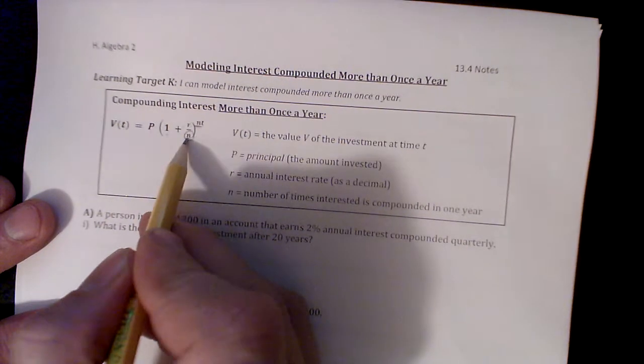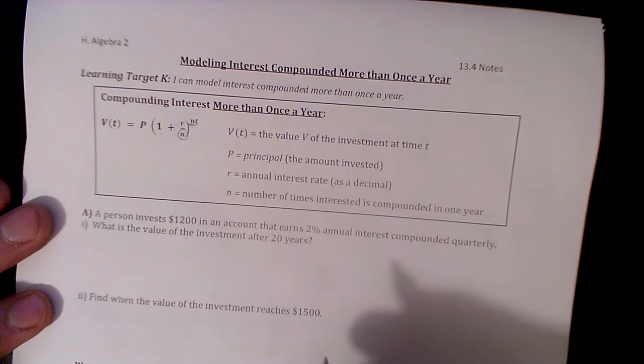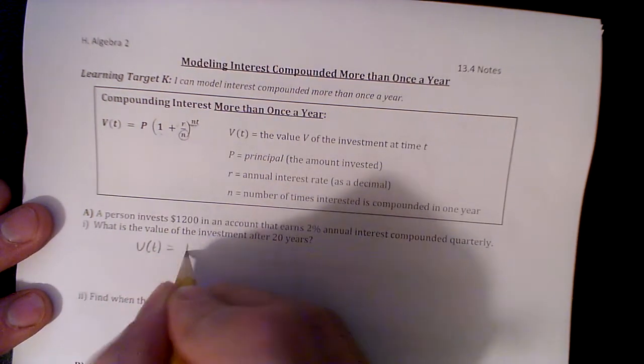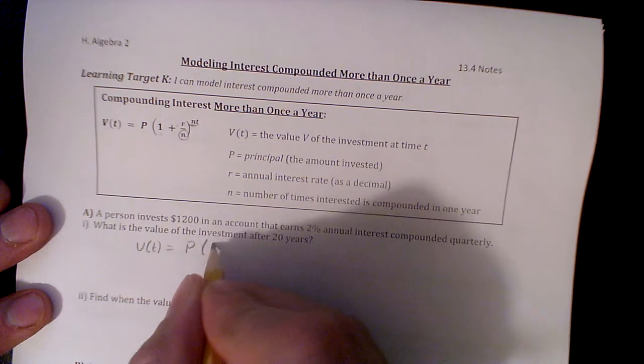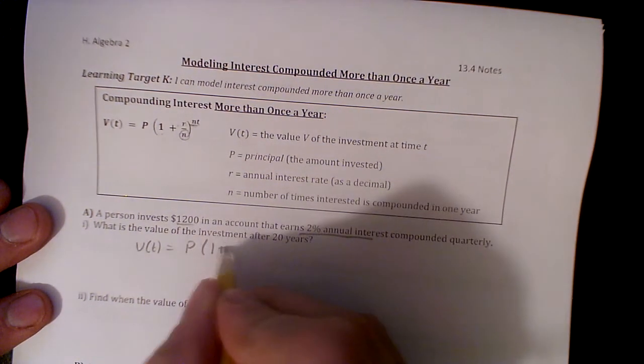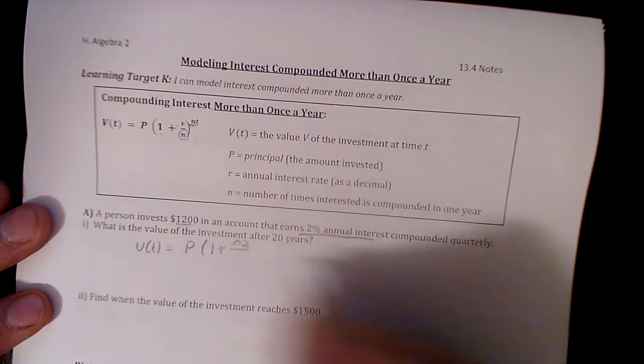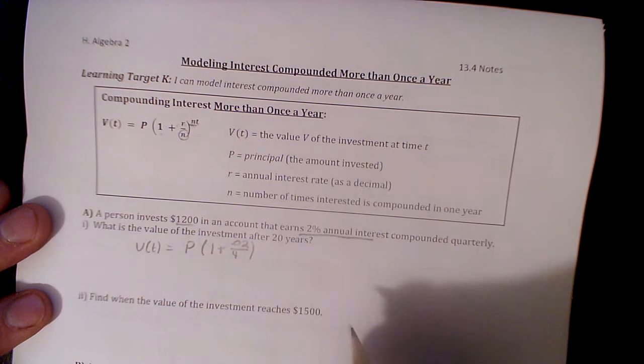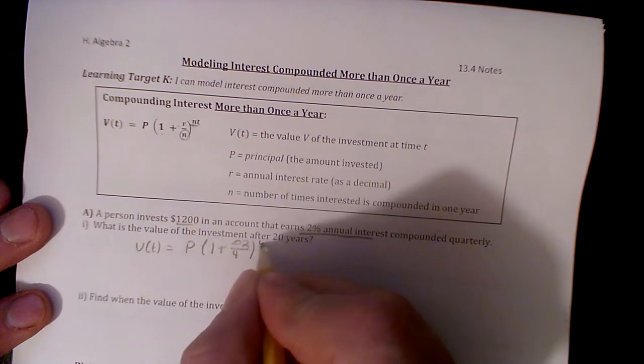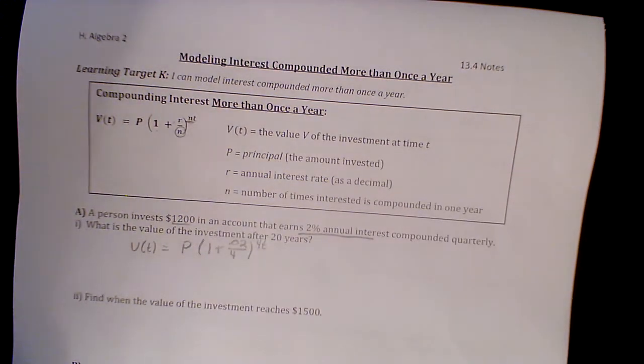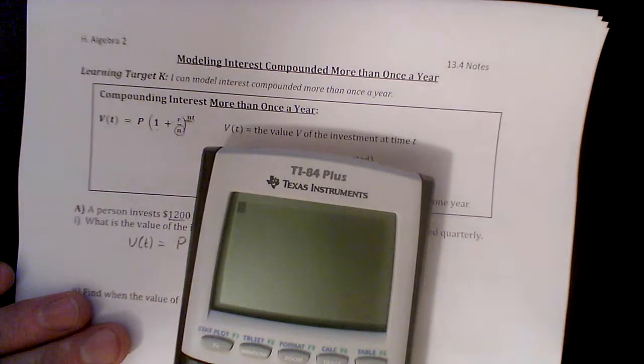One plus interest rate, number of times both here and here, times t. Let's do it. Person invests $1200, so I have my principal there. I know my one here in an account that earns 2% annual interest, so I'm going to say plus 0.02 right there, compounded quarterly, that's four times a year. We're going to divide that by four. And then times 4t.